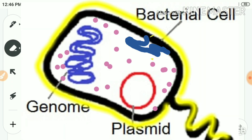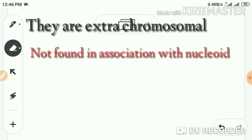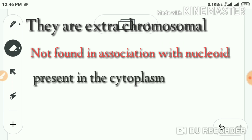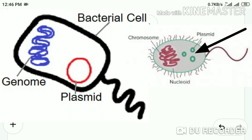Plasmids are extra-chromosomal elements found inside the cytoplasm of certain bacteria. Extra-chromosomal means they are not found in association with the main chromosome — they are present in the cytoplasm separately. They are tiny ring-like structures, whereas the main chromosome is a highly coiled structure. Plasmids have the ability to replicate independently.